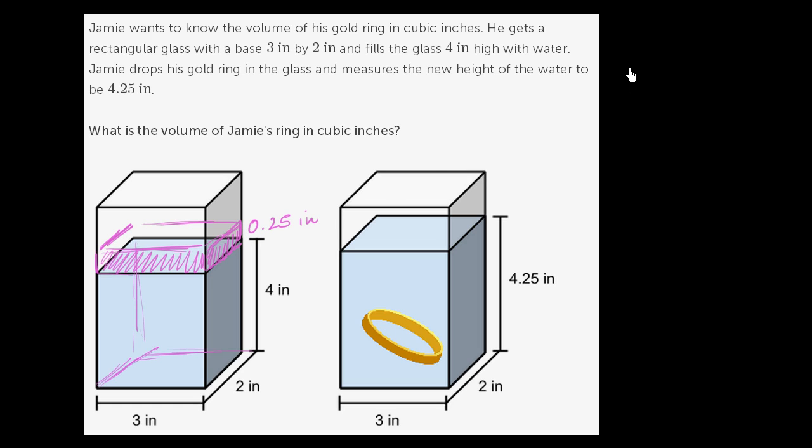So it's just going to be 3 times 2 times 0.25. 3 times 2 is 6 times 0.25. You could do that on paper or in your head. 4 times 0.25 is 1, and 2 more times 0.25 is 0.5. So this is going to be 1.5.